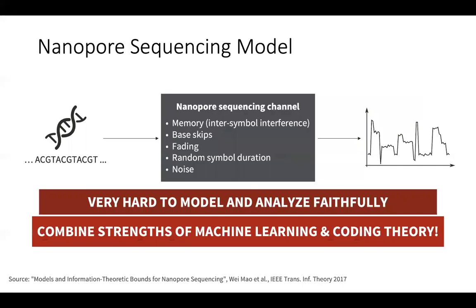Therefore, what we do is combine the strengths of machine learning — which allows us to model the nanopore signal very well — with the strengths of coding theory — which, once you have a model, allows us to build very good error correction codes.